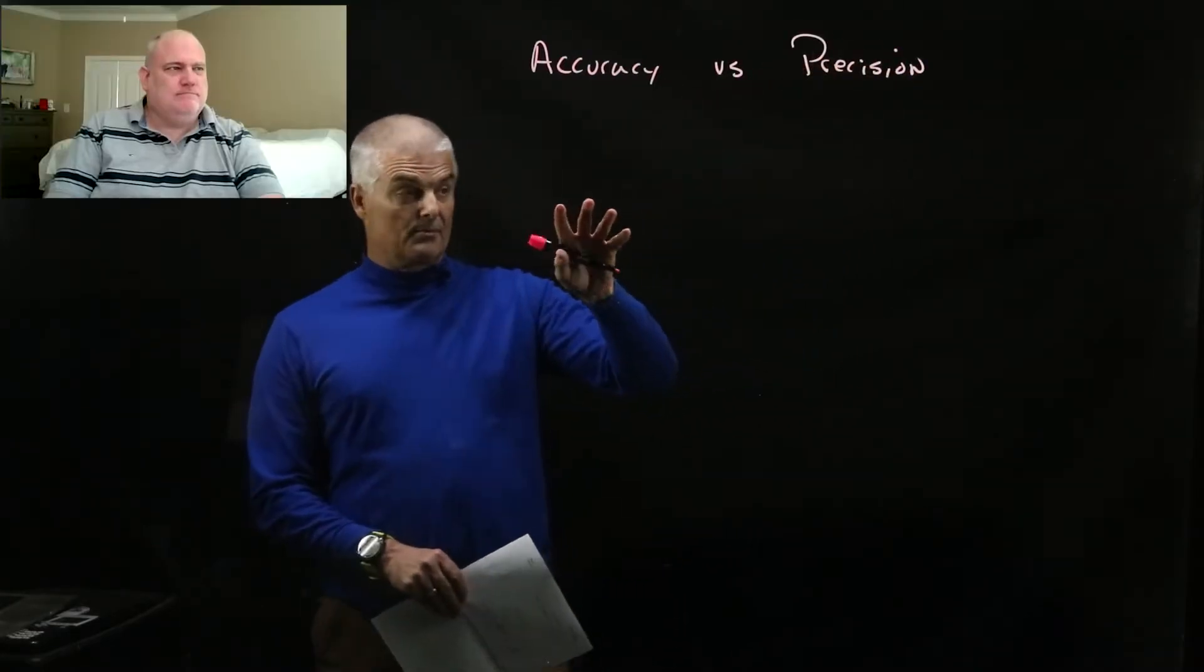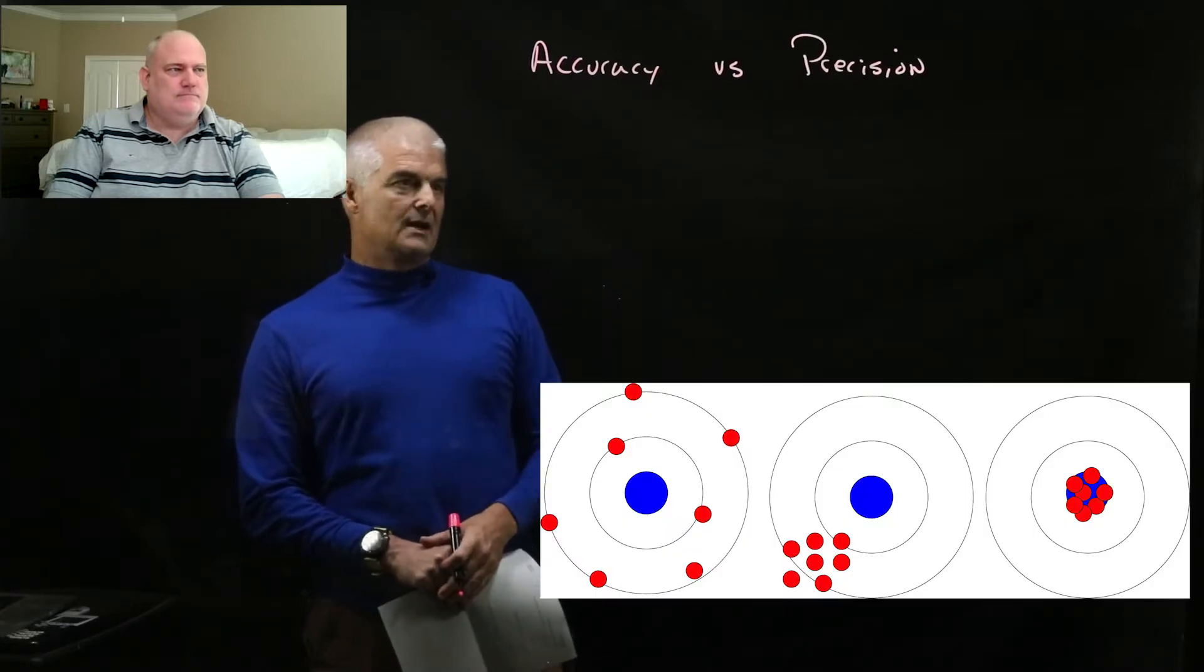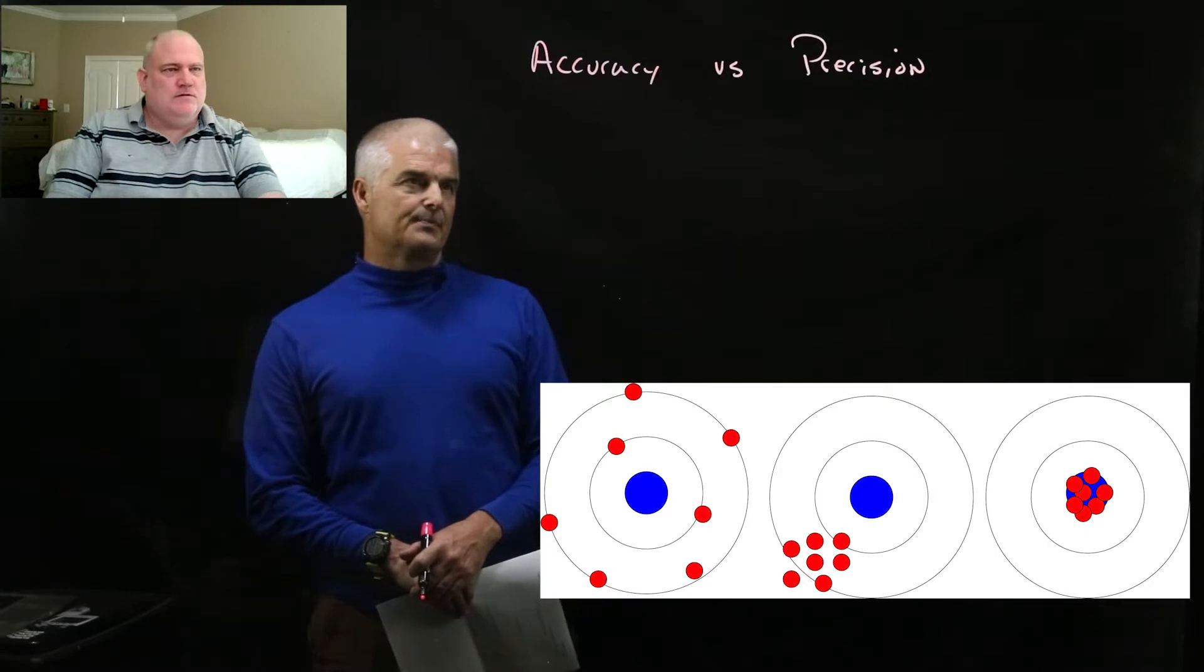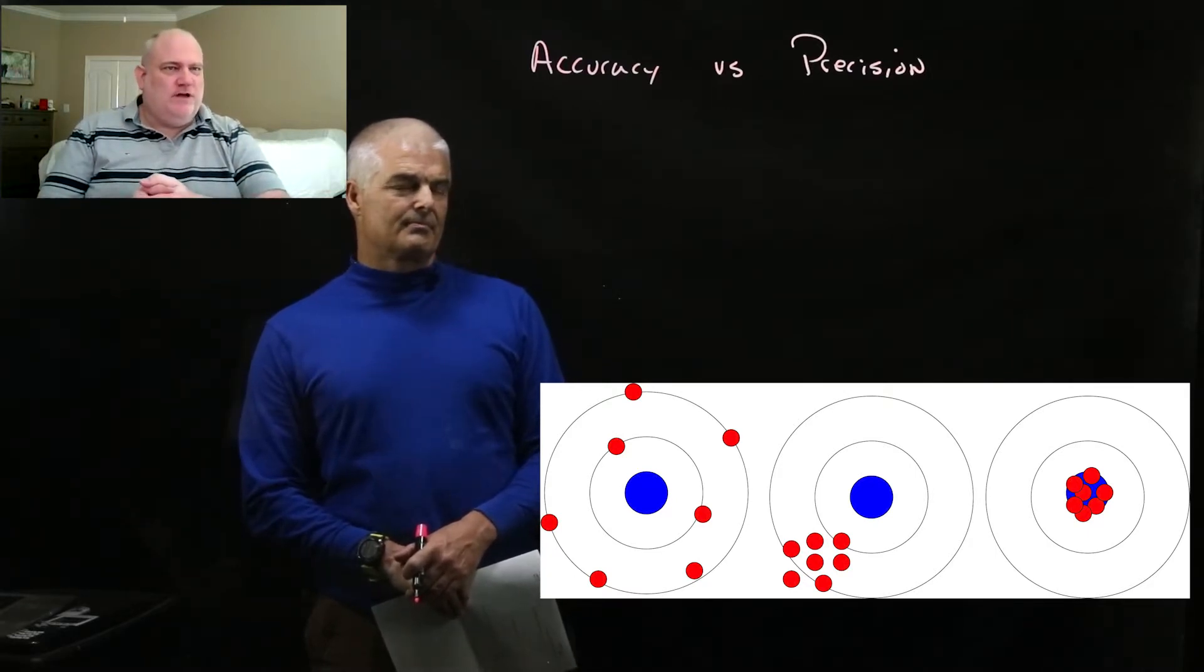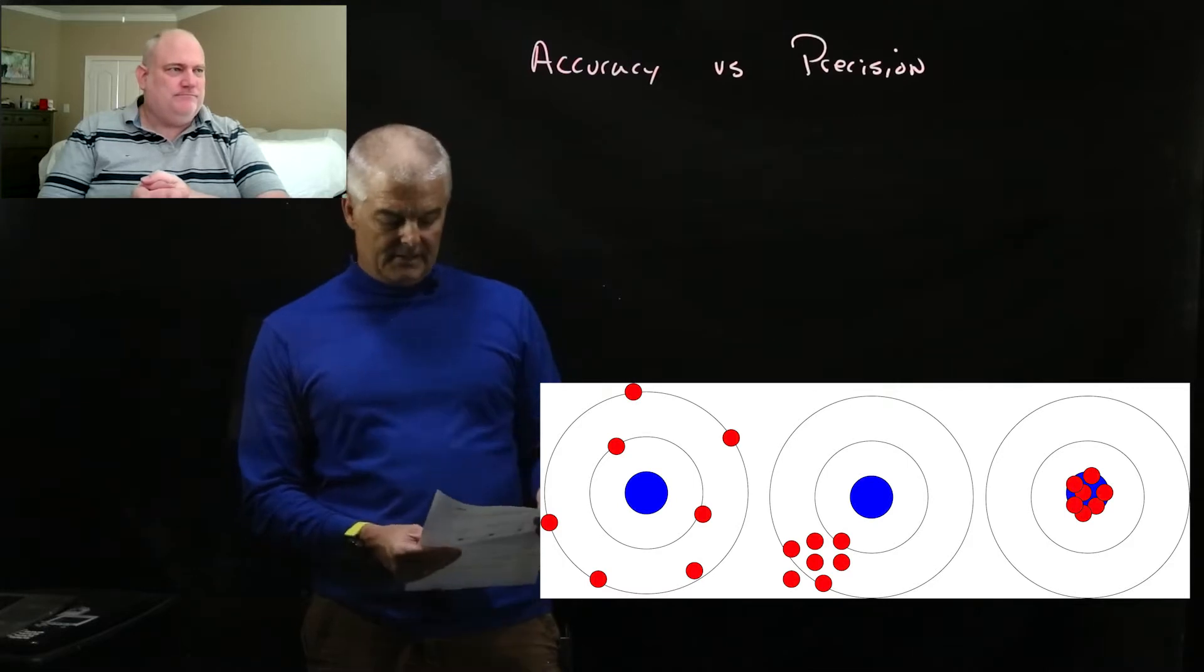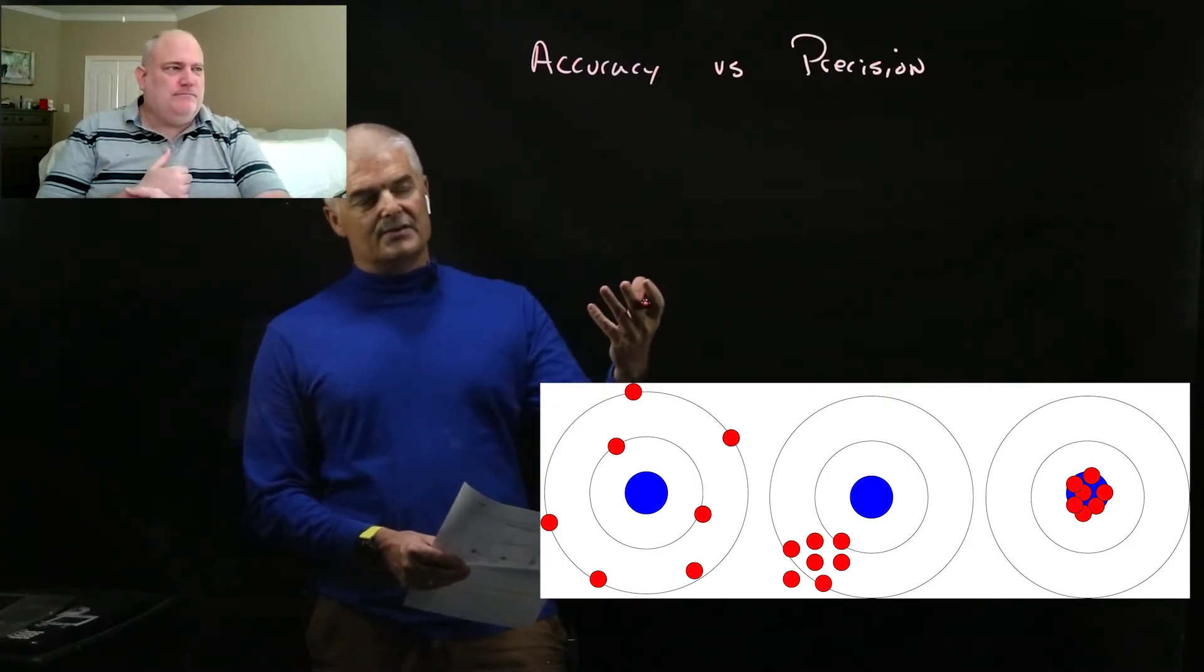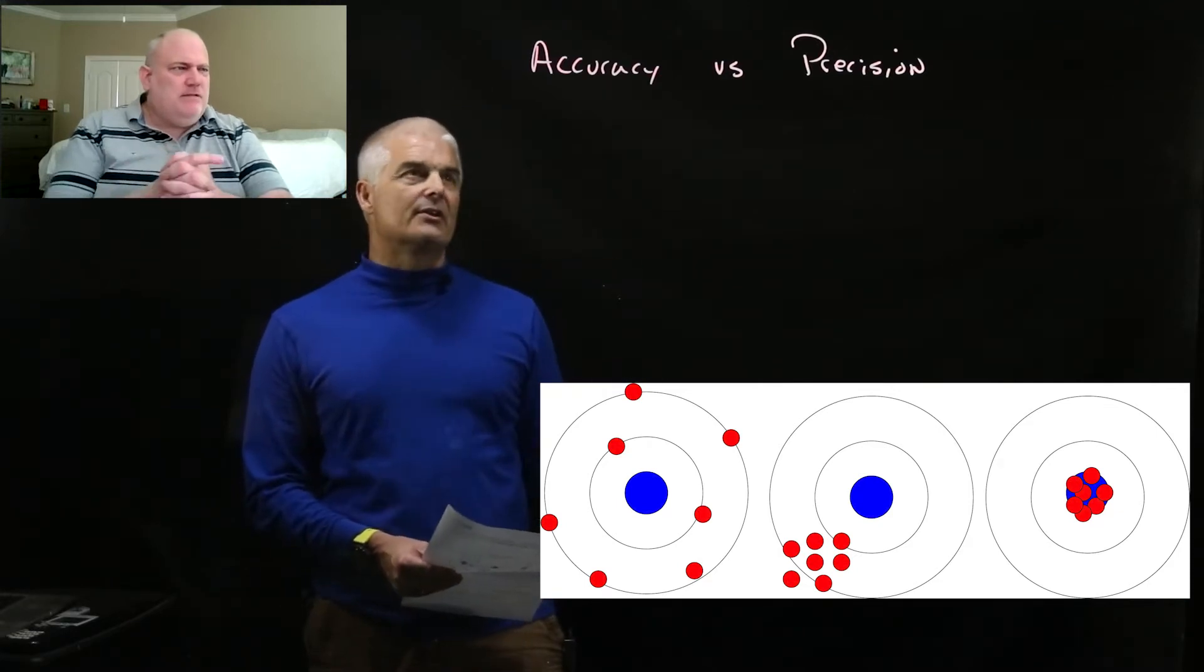So there's this concept of accuracy and precision. All right, two different terms best illustrated by this image that we see on the screen. So tell me about the first image right there, what would you say about that one, Mr. D? Well, if we're trying to hit the bullseye in the middle, we're not being very accurate, are we? No, no. In fact, that's not accurate and not precise because nobody hit, you know, no one's close right, and they're not even close to each other, right.